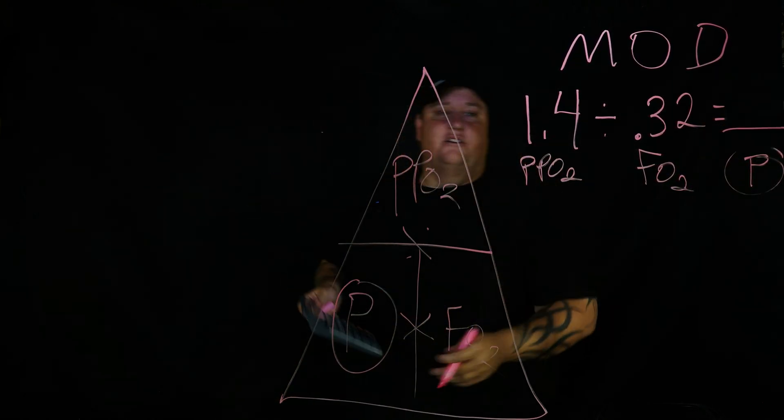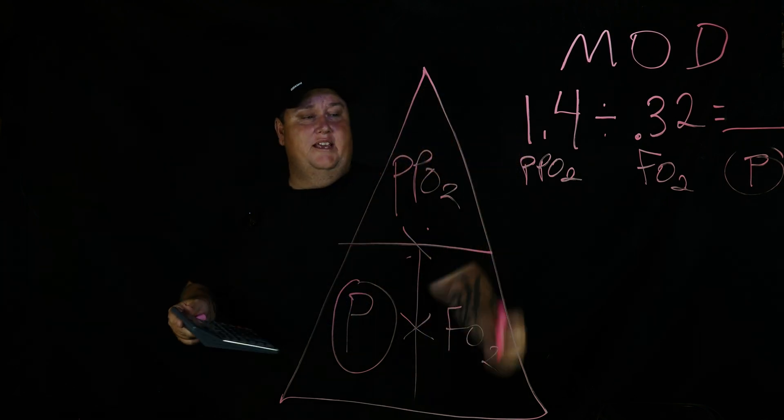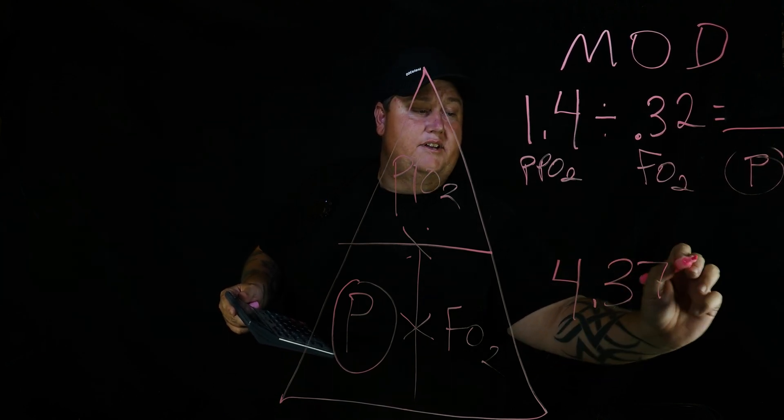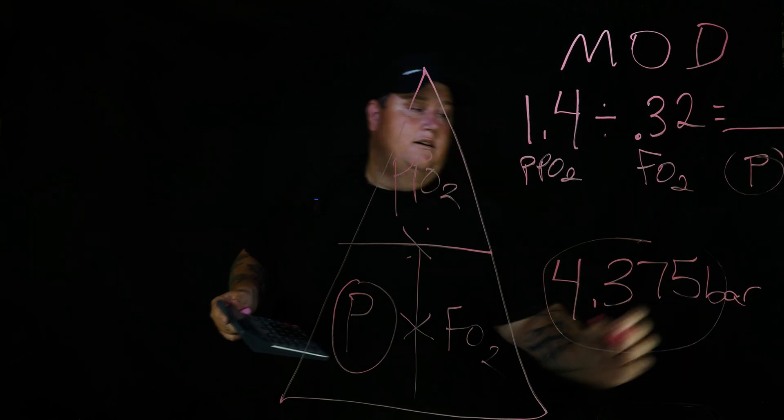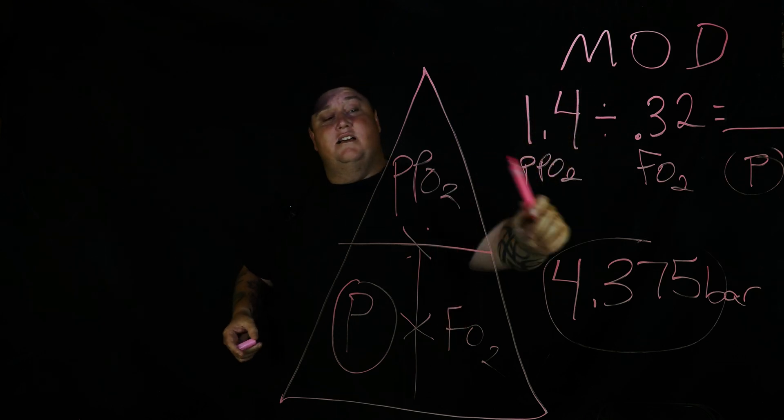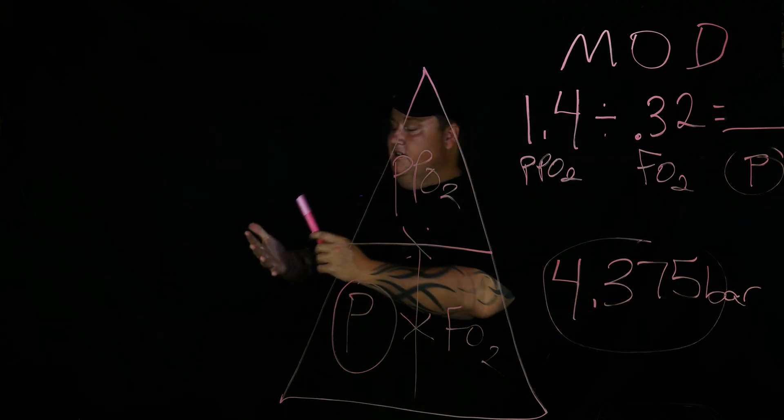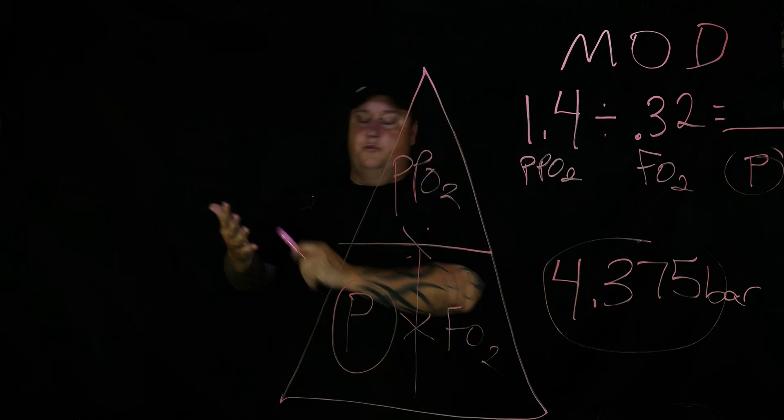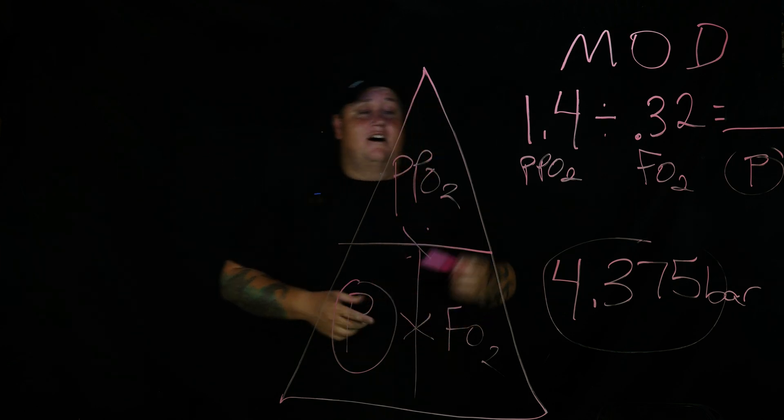Okay, so this is our ppO2, this is our FO2, and it will equal our pressure. So we just take our calculator real quick: 1.4 divided by 0.32, and we get 4.375 bar. Just remember we're using bar. And so there we go, our MOD with 32 percent nitrox is 4.37 bar or atmospheres. All right, we check our SPG—I can go at 32 percent, I can go to 4.0—oh, I don't have atmospheres on my gauge, I got meters.